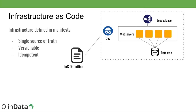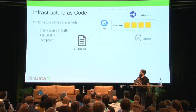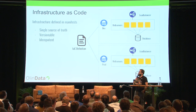Infrastructure as code is basically the next evolution of this. By defining our complete infrastructure through manifest files combined with the power of the cloud, you're able to spin up and tear down complete environments through the single click of a button.